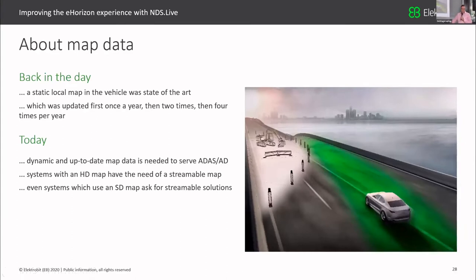As a short introduction, I want to share how I experienced map data in the last decades. Back in the day, the state-of-the-art was a static local map in the vehicle with only limited update capabilities — maybe once a year, later twice or four times a year. But today, dynamic and always up-to-date map data is needed to serve ADAS and automated driving use cases, which leads to the need for a streamable map, even for systems with an HD map.